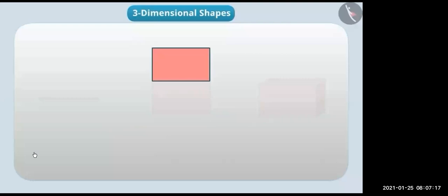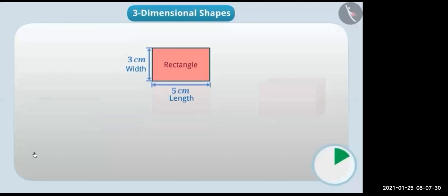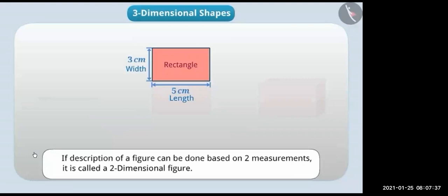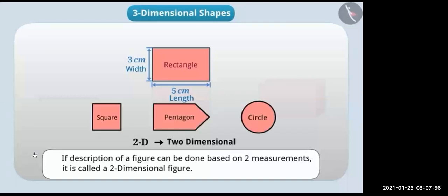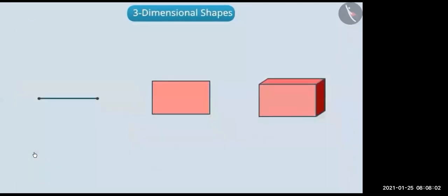The second shape is a rectangle whose length is five centimeters and width is three centimeters. Can it be described by just length or just width? No — we need both measurements. A figure that requires two measurements to describe is called a two-dimensional figure — in short, 2D. All flat shapes like squares, pentagons, and circles are two-dimensional, or 2D shapes.